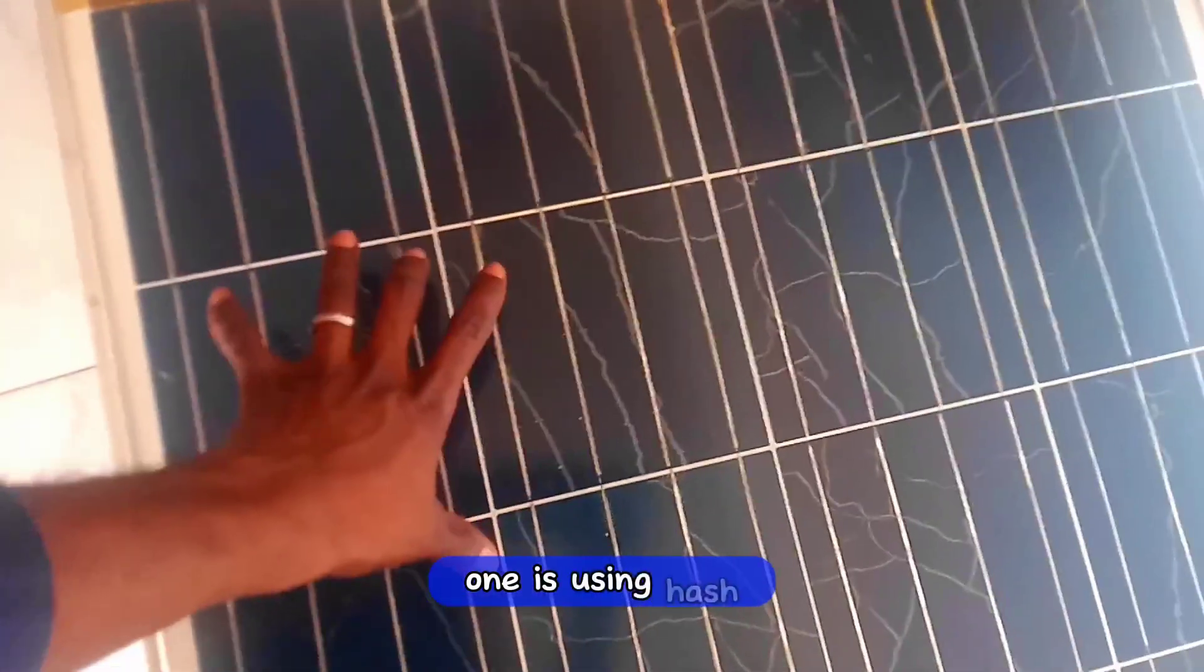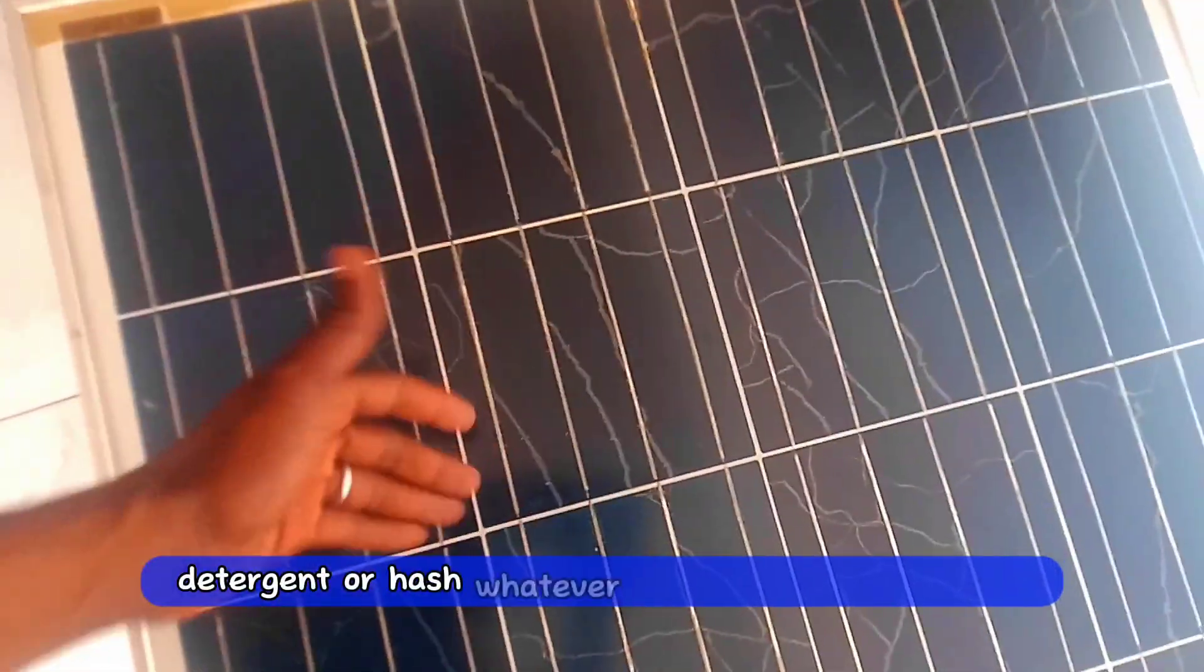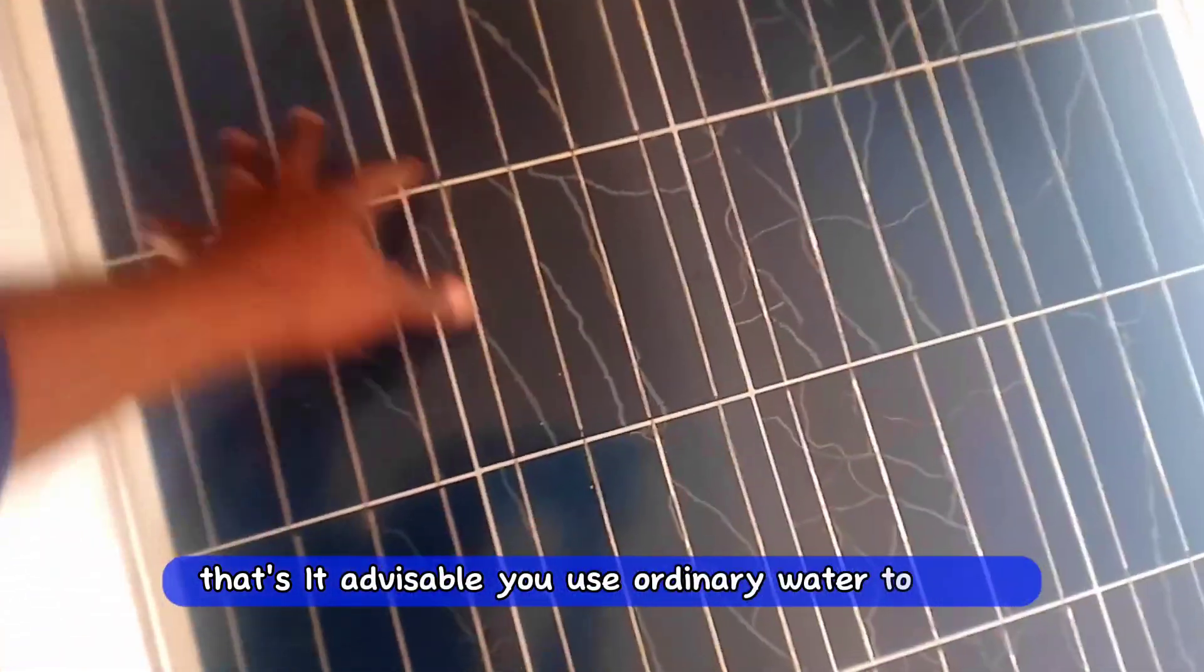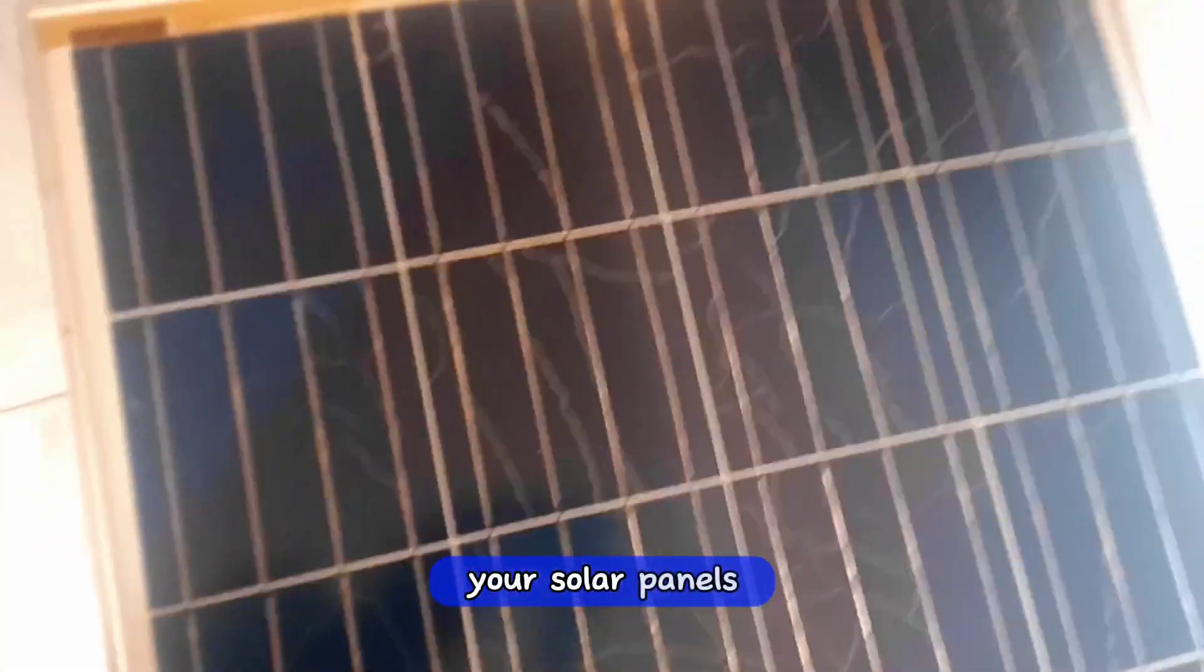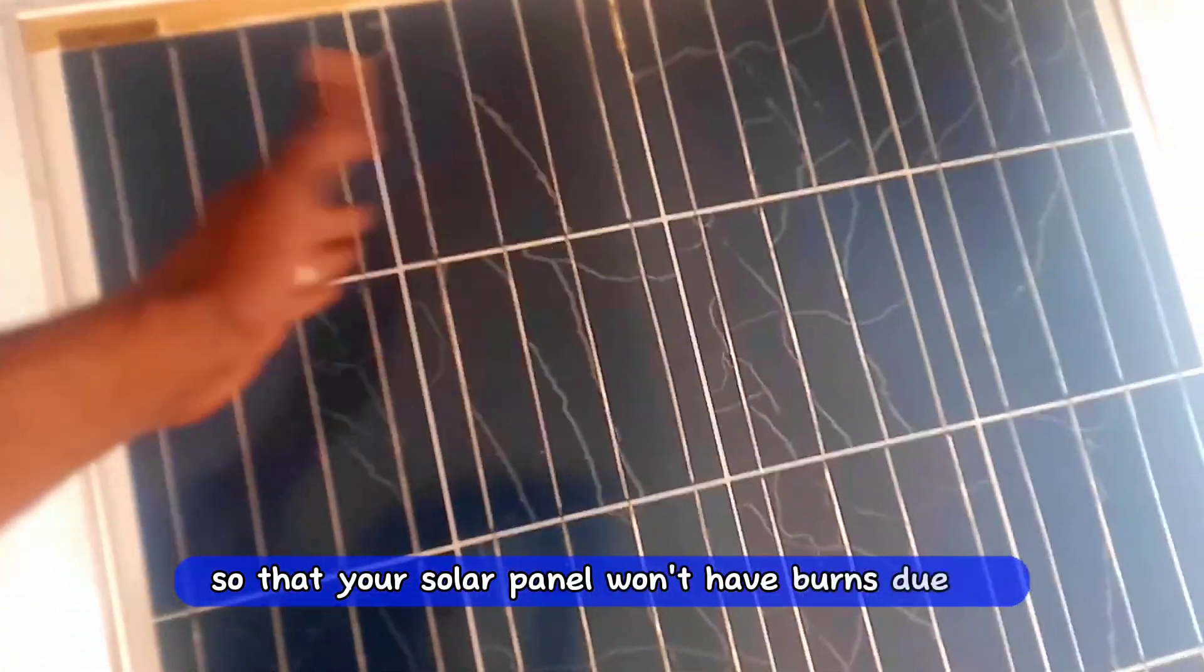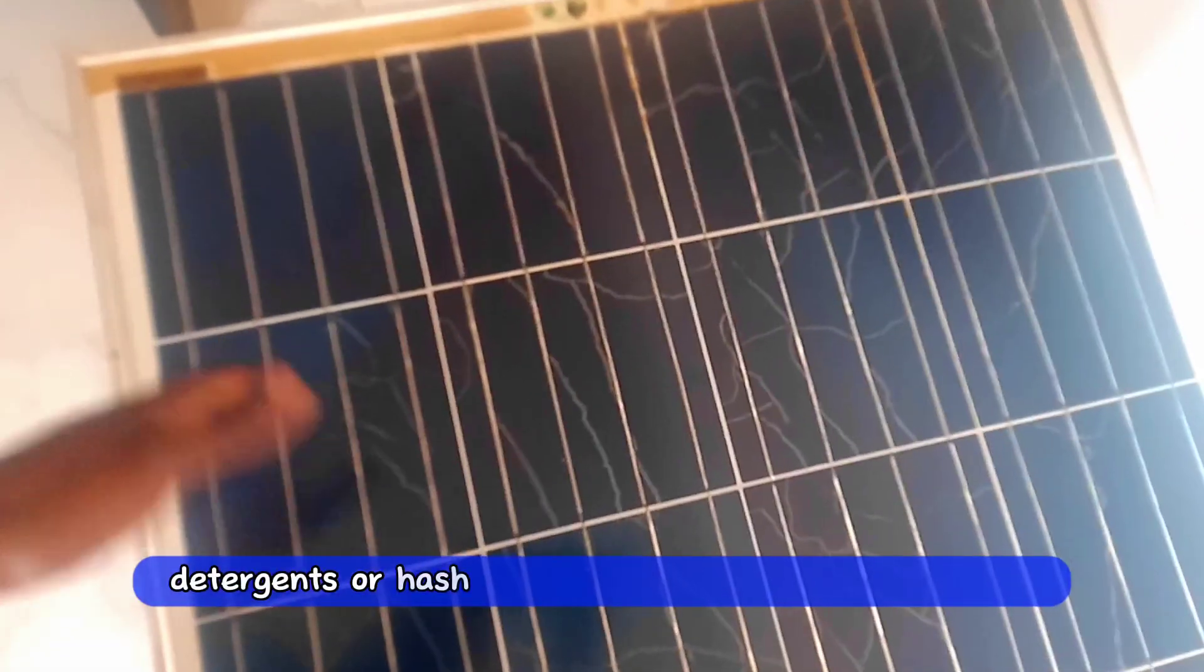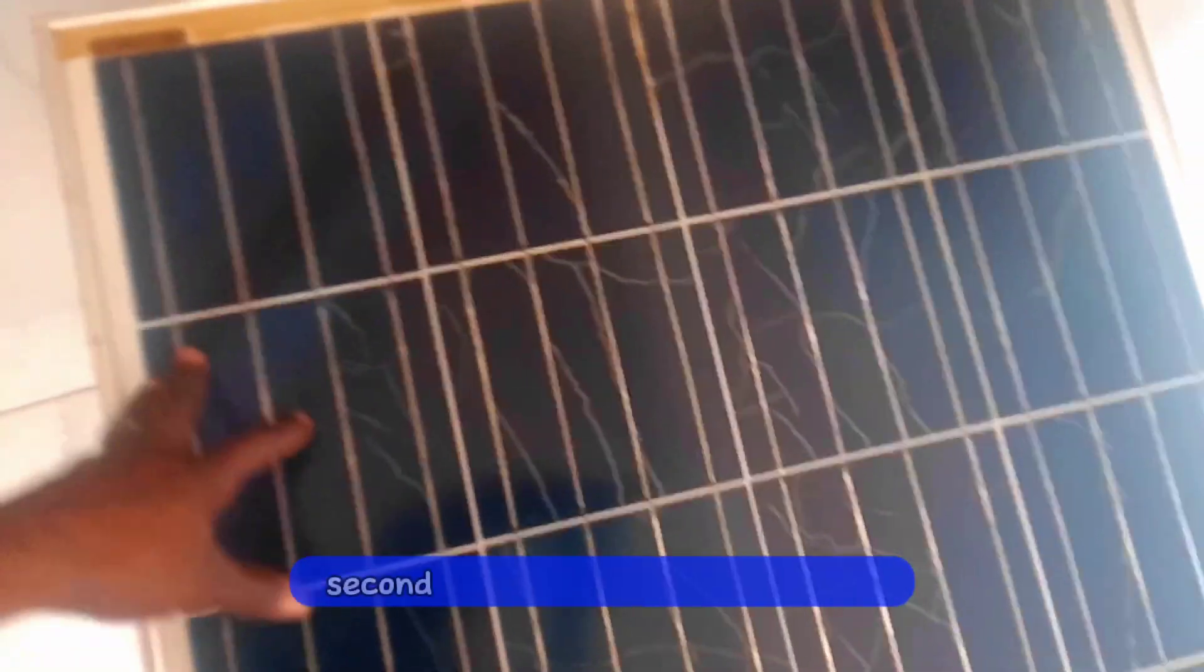One is using harsh detergent or harsh chemicals to wash your solar panel. That's why it's advised to use ordinary water to wash your solar panel so that your solar panel won't get damaged due to those harsh detergents or harsh chemicals you use in washing them.